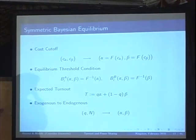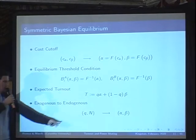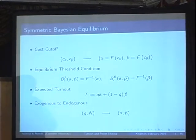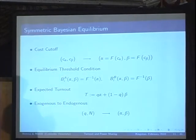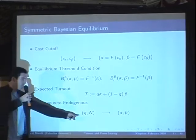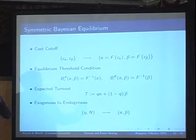In terms of exogenous to endogenous variable, the mapping is: Q is the preference parameter — which party has the most supporters. This could be considered the polls.